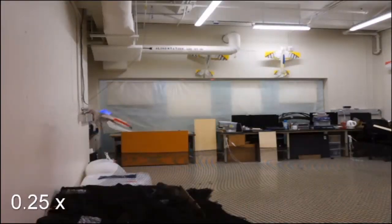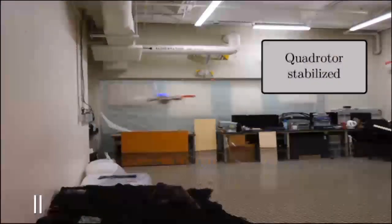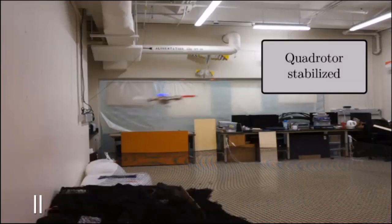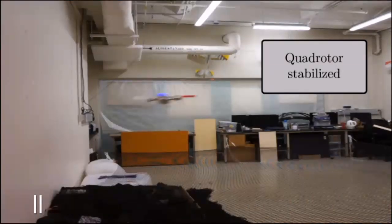An aggressive attitude control law tracks the desired acceleration vector. As soon as this tracking has been achieved, the quadrotor reorients to a level attitude and stabilizes its altitude.